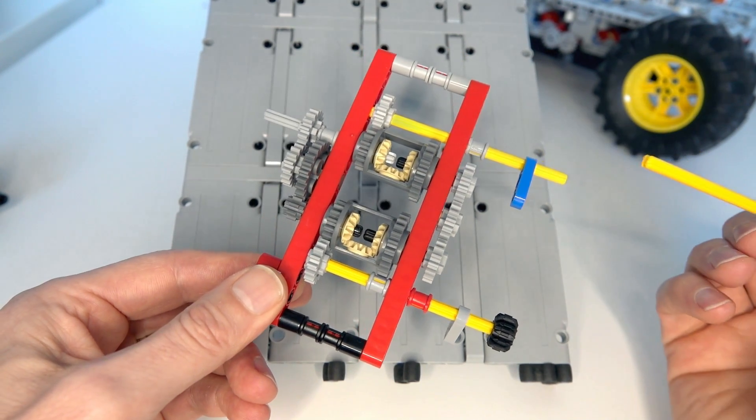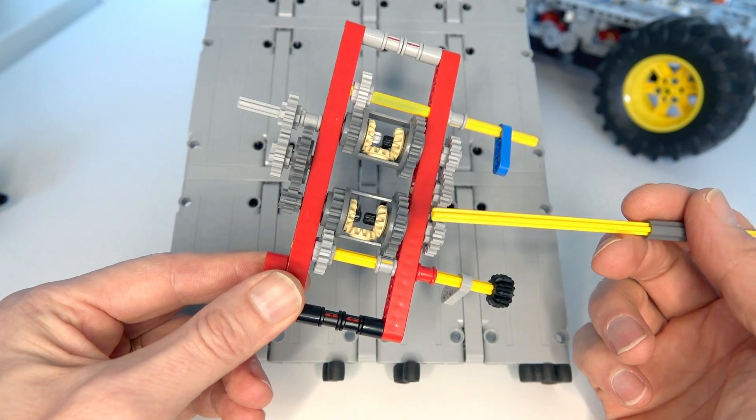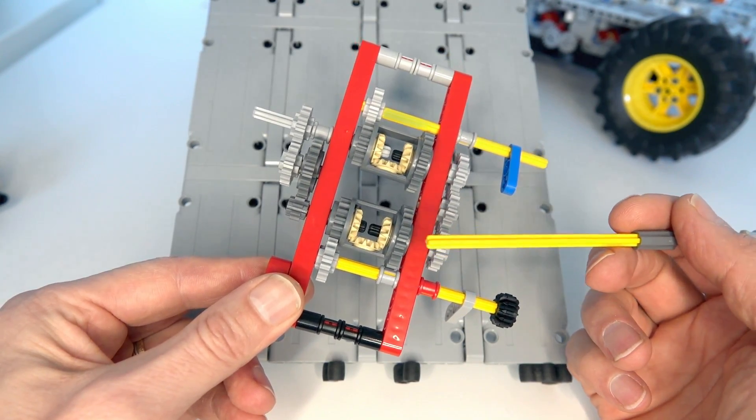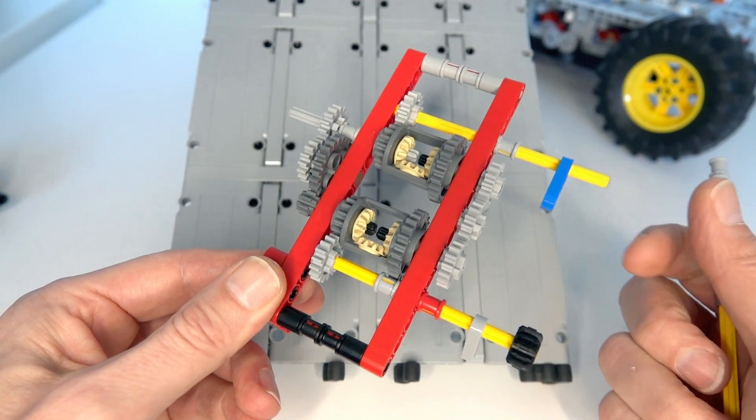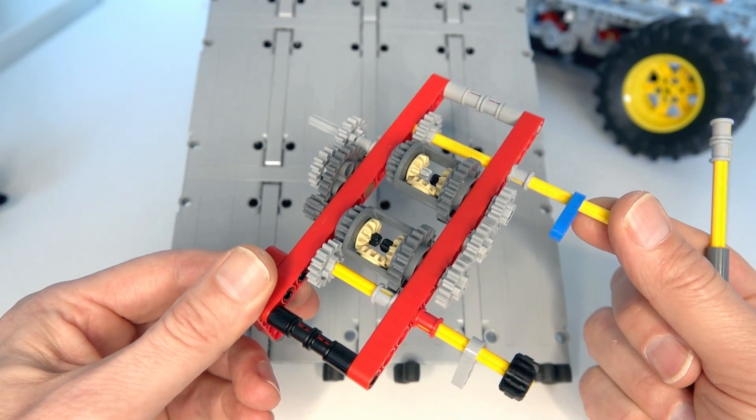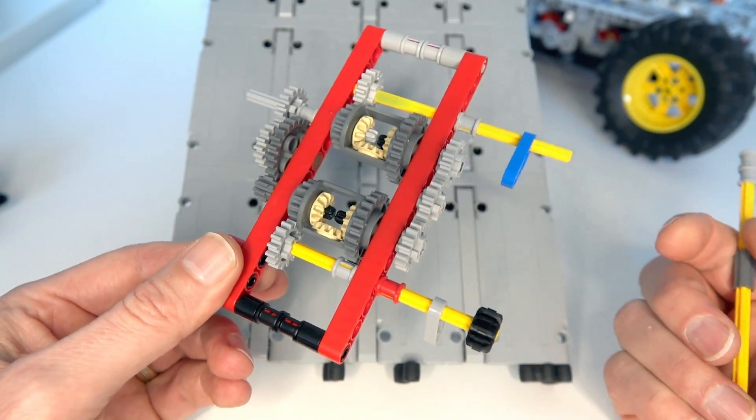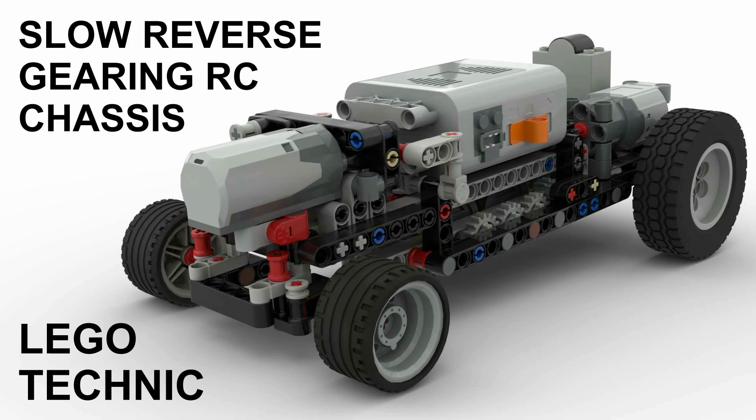Hi and welcome to today's LEGO Technic video. What I'm going to be talking about is this particular configuration of two differentials that I've been playing around with for a while now. I actually use this particular design to create one of my videos where I've got a fast forward and a slow reverse car.